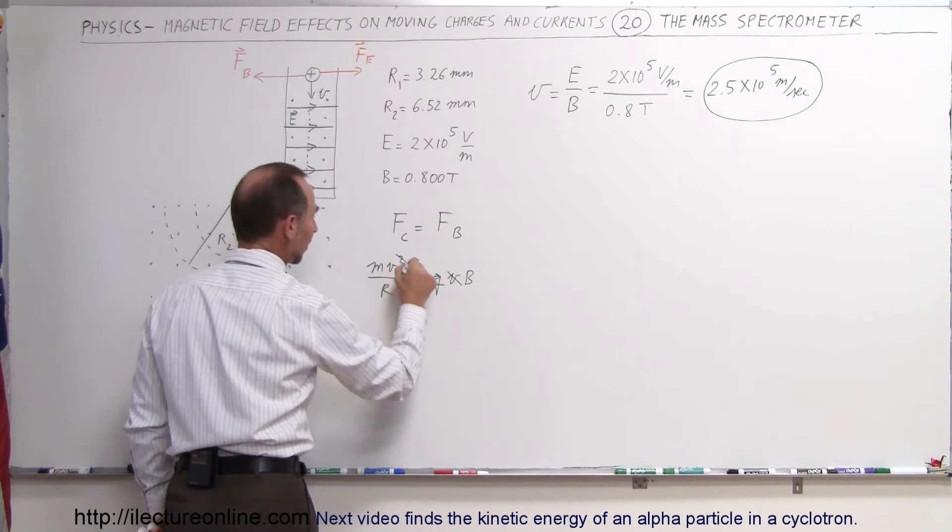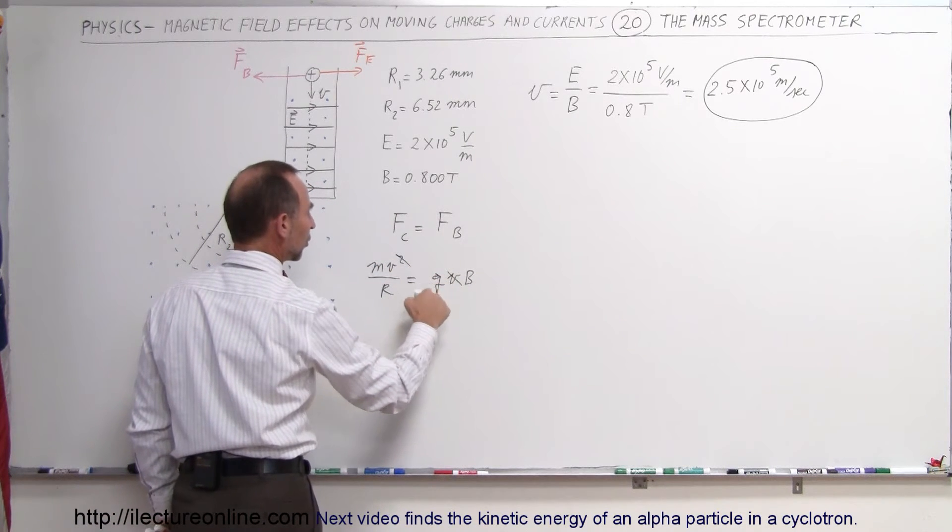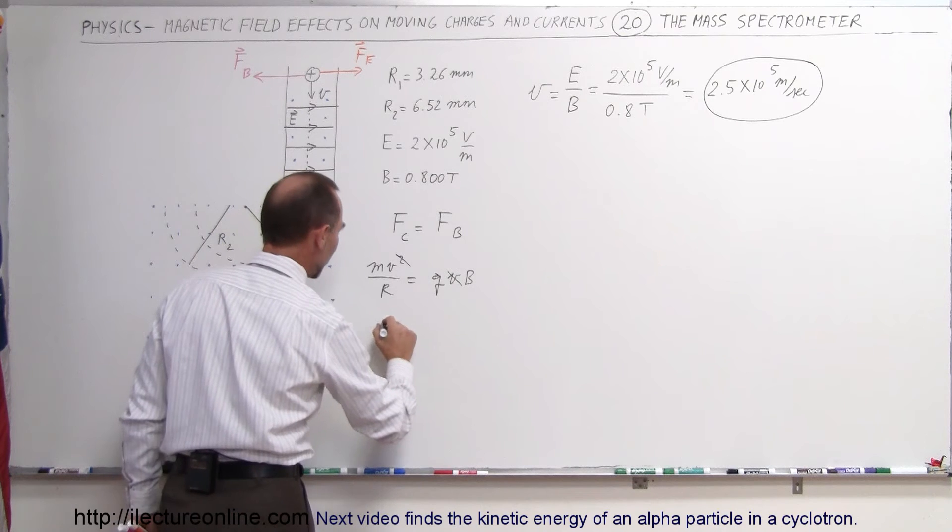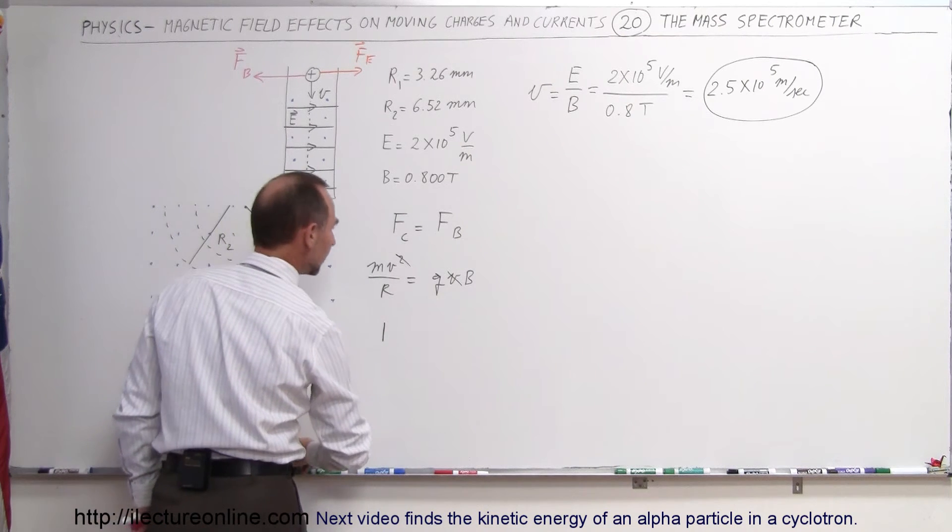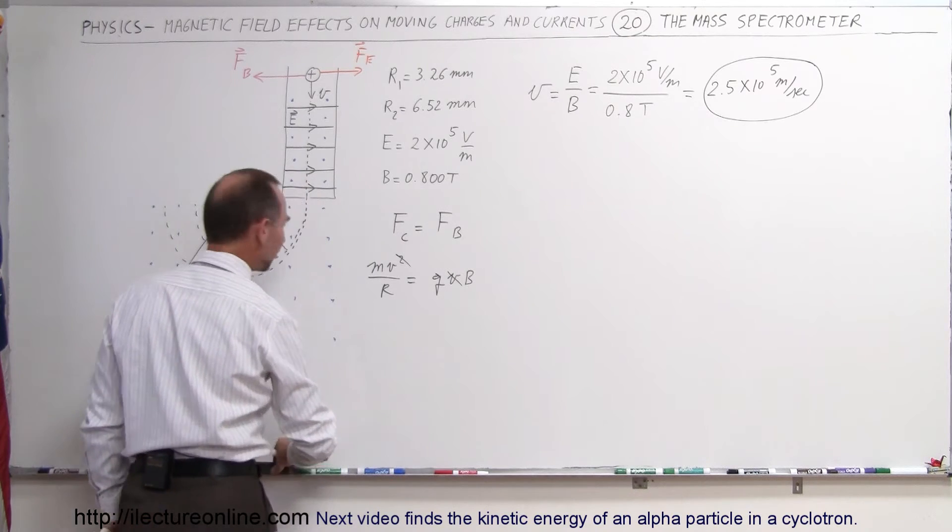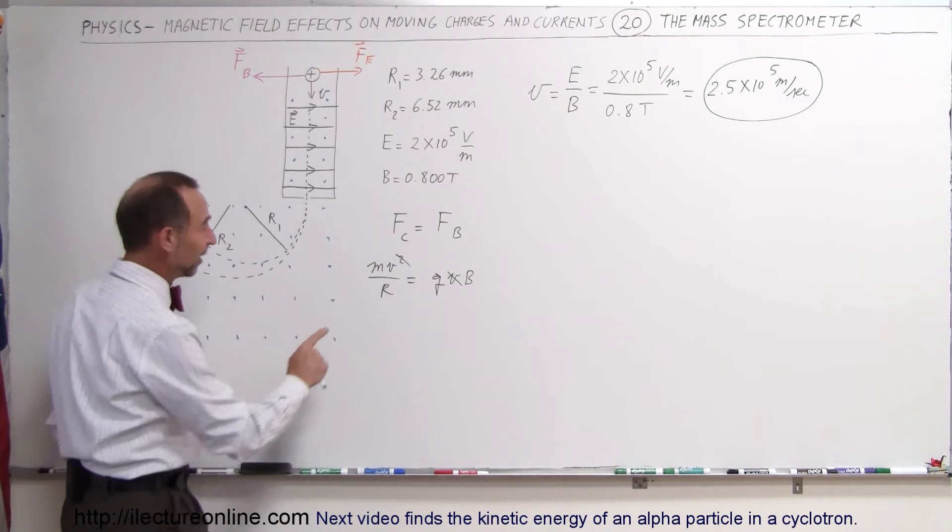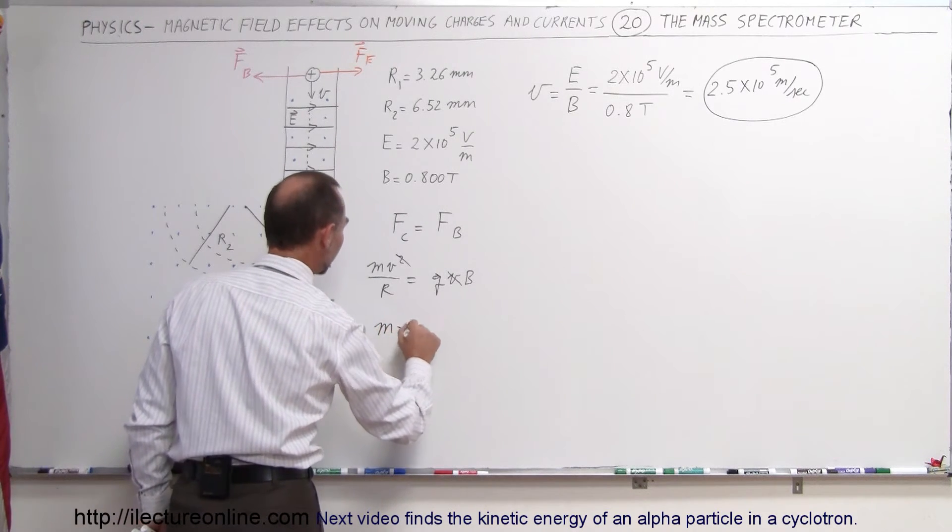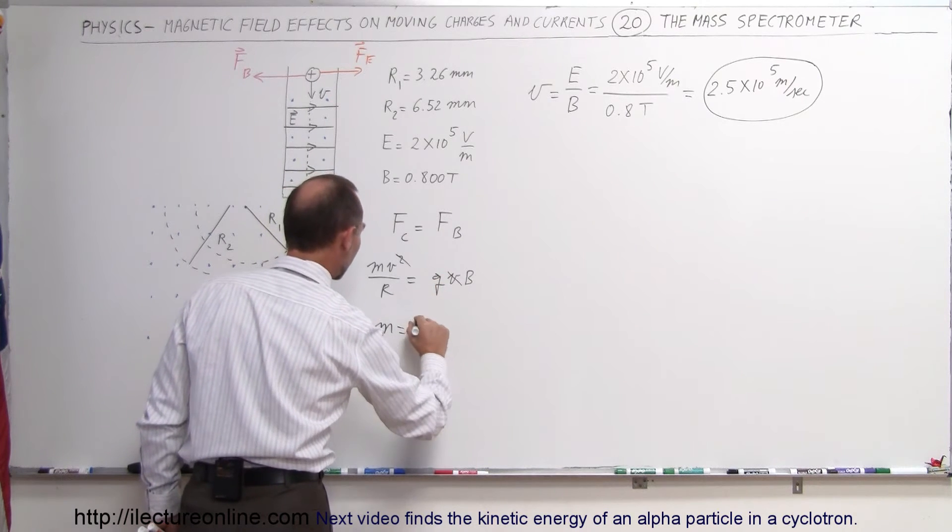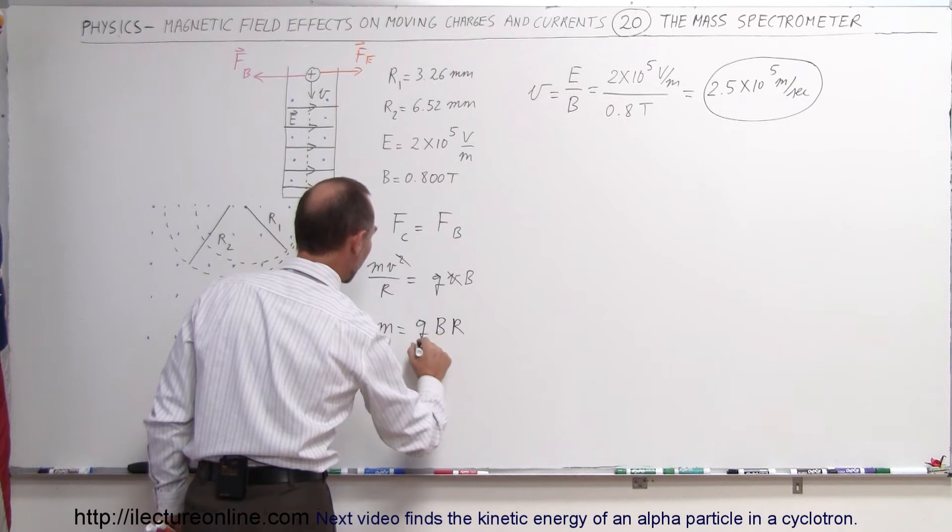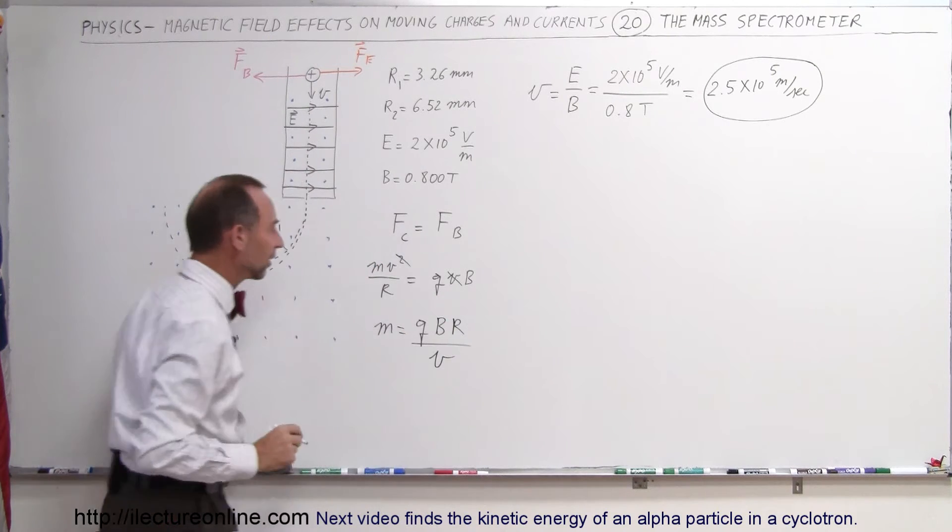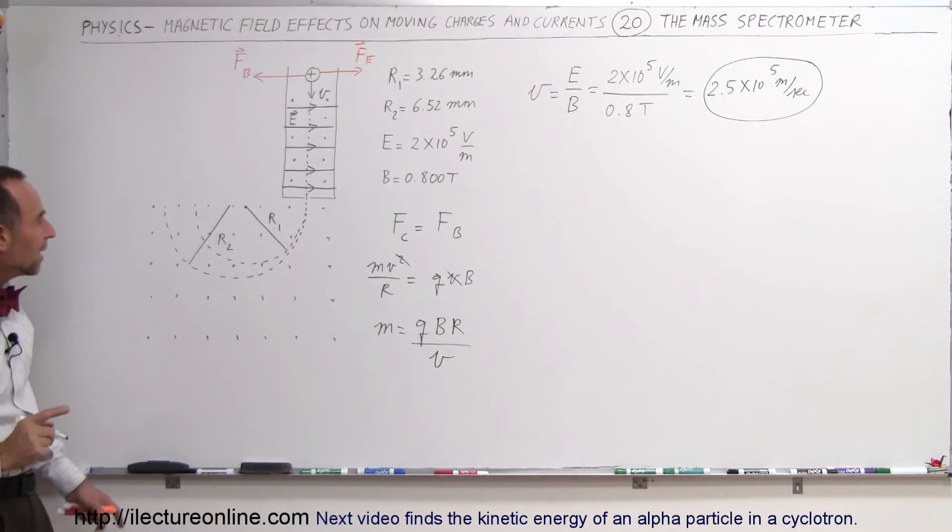Notice that this velocity will cancel out that velocity. We put r up here, the qb down here, flip the equation around. What I want to do here, I don't want to solve for the radius, I want to solve for the mass. The mass of the particles is equal to q times b times the radius of the path divided by the velocity of the particles. So now we have two radii.